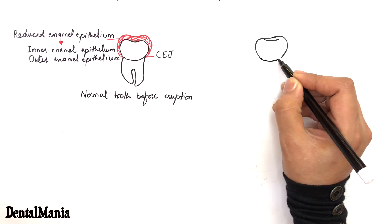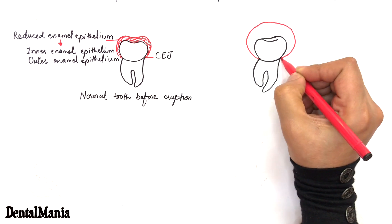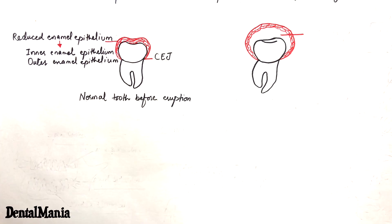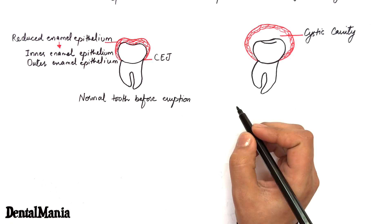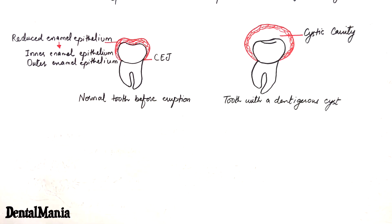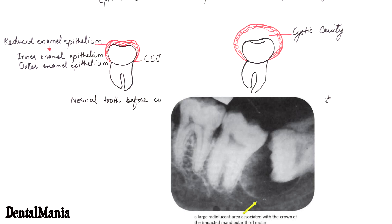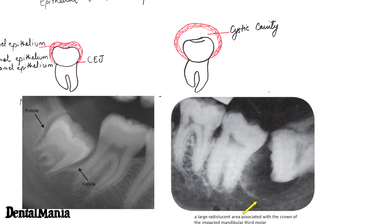A dentigerous cyst forms at the interface of the reduced enamel epithelium and the tooth crown, resulting in separation of the reduced enamel epithelium from the crown surface. Radiographically, the cyst appears as a radiolucent area surrounding the crown. This radiolucent area must be at least 3 to 4 mm in diameter to distinguish it from a normal dental follicle.